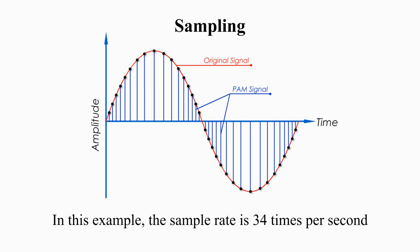In this example, the sample rate is 34 times per second, because this one-second-long analog signal is sampled 34 times. We use hertz to measure sample rate. For example, one sample per second is 1 hertz, 1,000 samples per second is 1 kHz, and 1,000,000 samples per second is 1 MHz.